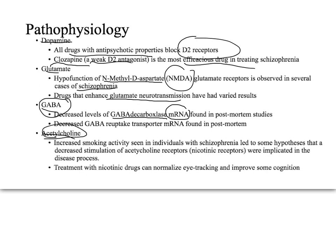Acetylcholine acts on receptors also sensitive to nicotine, and there is an increase in smoking activity in individuals with schizophrenia. Some researchers think acetylcholine receptors may have problems, driving increased smoking. Supporting evidence is that treating with nicotinic drugs can normalize some things — especially eye tracking, which is impaired in schizophrenia. Nicotine can improve those symptoms, though it may be that overstimulation of those receptors is compensating for a problem elsewhere.